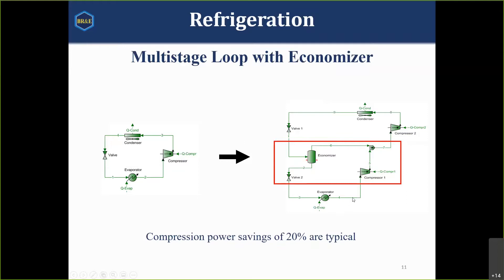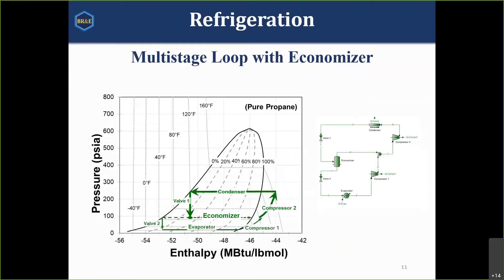This gives us two benefits: a larger liquid fraction going into the evaporator, and a lower overall mass flow to compress from the lowest pressure back to the highest. We have a compressor taking the lowest-pressure refrigerant back up to the intermediate economizer pressure, then all refrigerant is mixed and boosted back to the final condenser pressure. On the pressure-enthalpy diagram, stream three represents the bottom corner — we're starting with a larger fraction of liquid going into the evaporator, and still compressing up to about 240 psia.